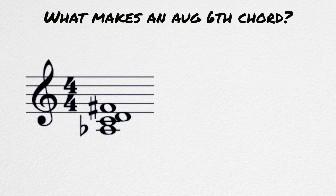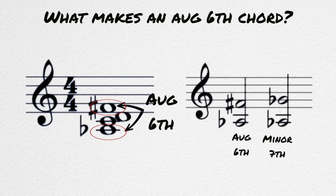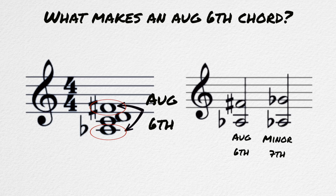What are they? An augmented sixth chord is a chord that contains the interval of an augmented sixth, usually between the bass and an upper voice. The interval of an augmented sixth sounds the same as a minor seventh, but it is written as a sixth.